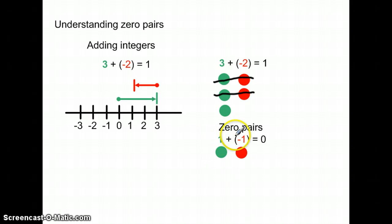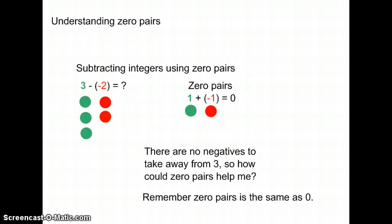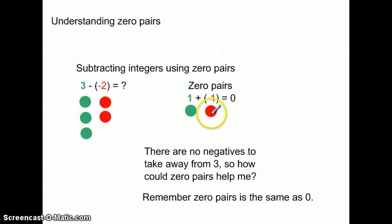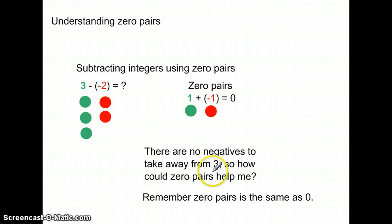Now let's apply zero pairs to subtracting integers, which sometimes people have difficulty understanding. Here we have a different problem: three positive integers and we're subtracting two negative integers. Remember, zero pairs — a positive and a negative — cancel each other out. In this problem, there are no negatives to take away from 3. We need two negatives to take away from 3, so how can zero pairs help solve this problem?